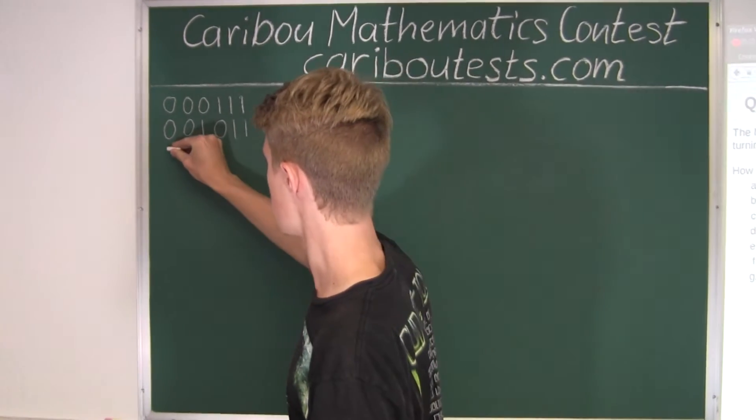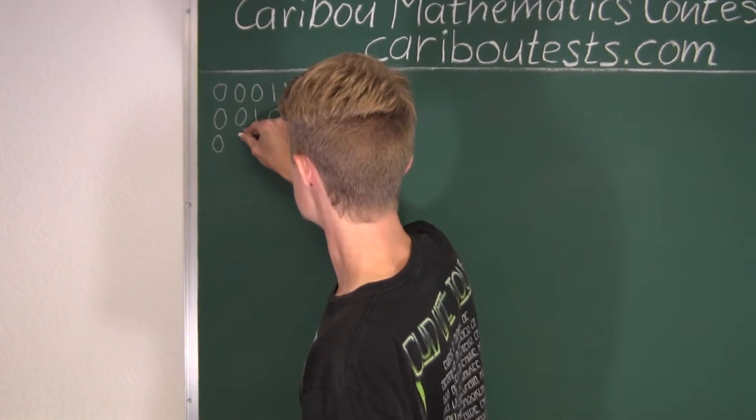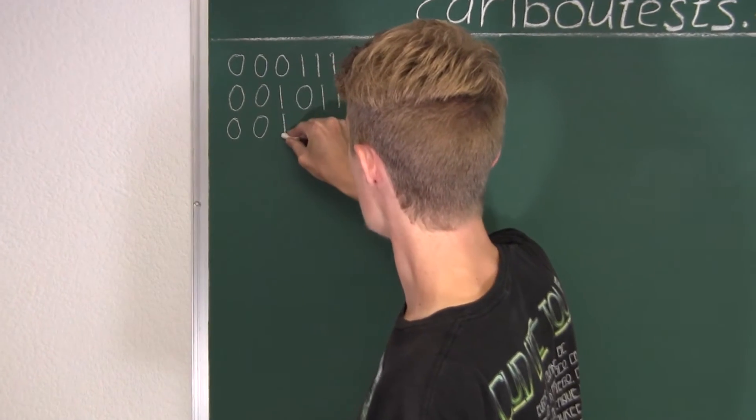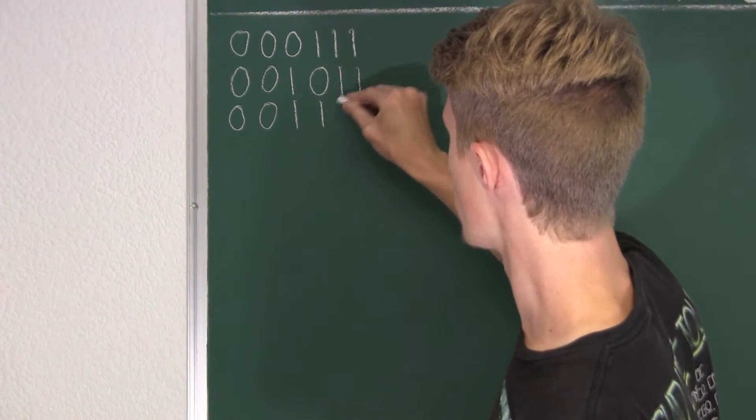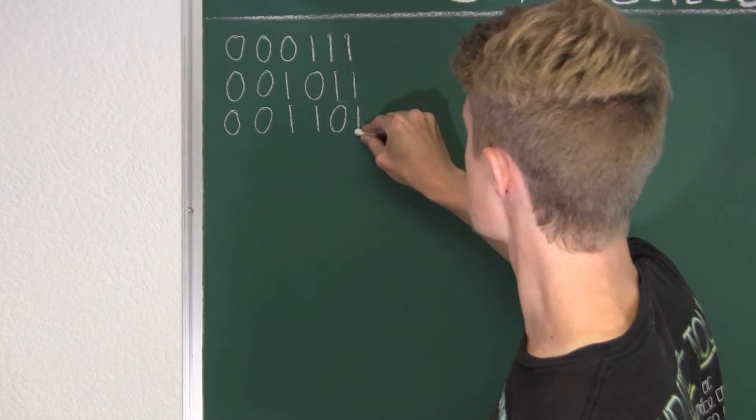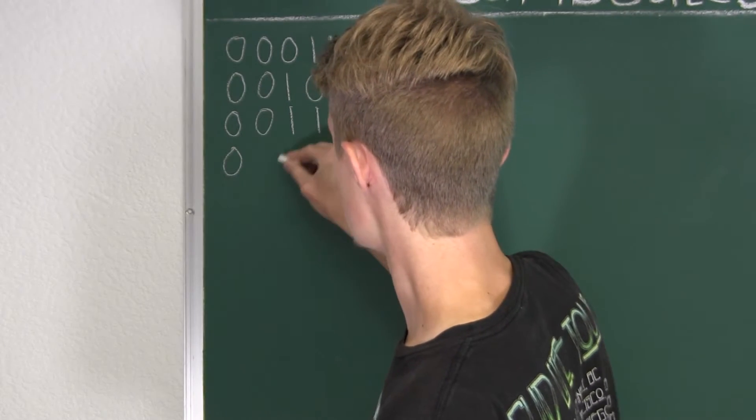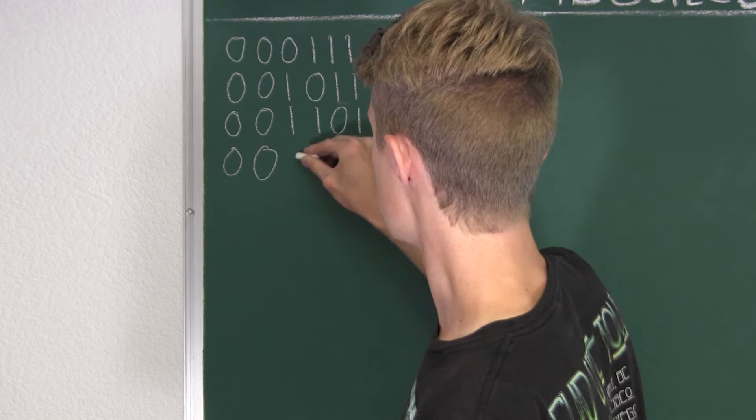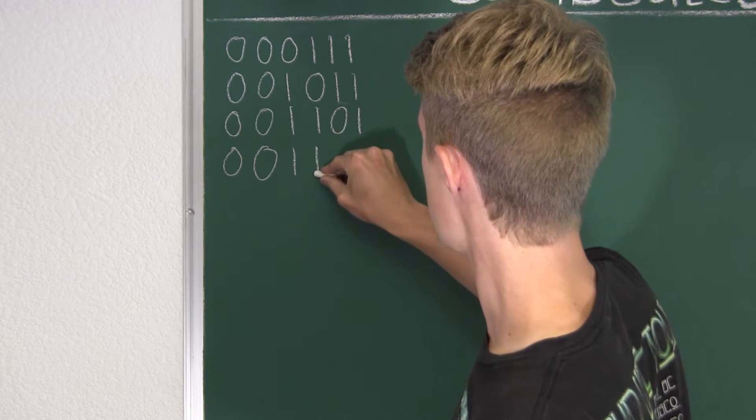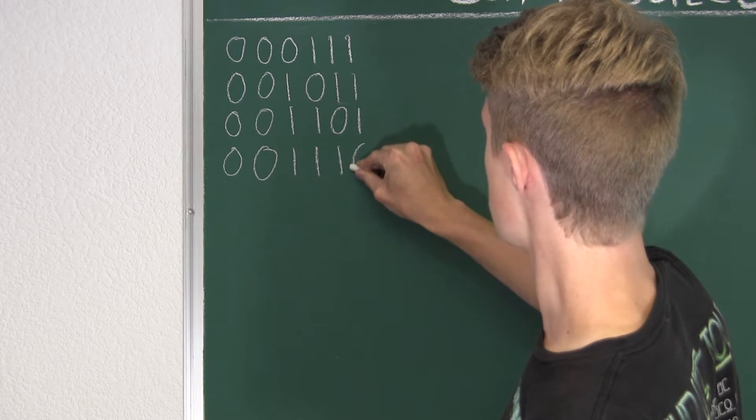Okay, and now next we would have two zeros again, and again a 1, now we would have another one before the zero, like this, and now finally we would have the three ones, and then the zero at the end.